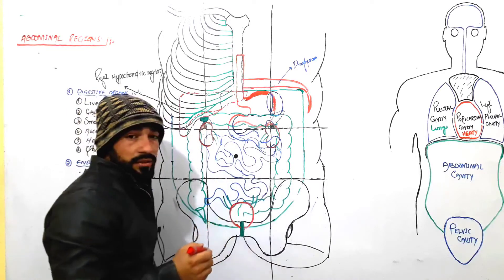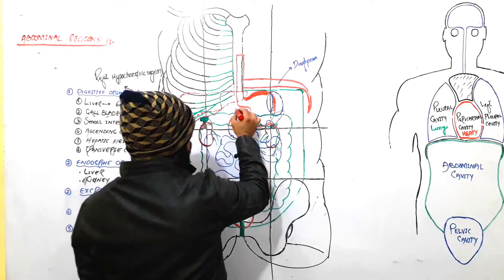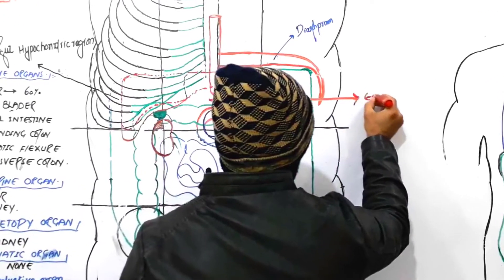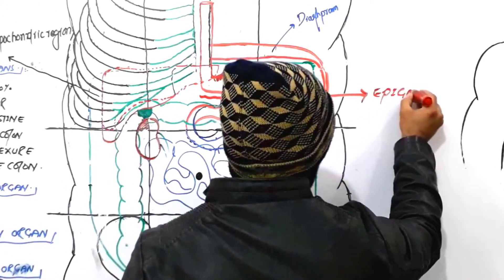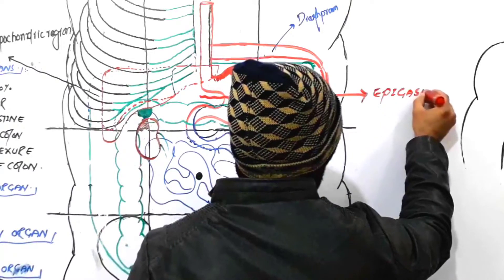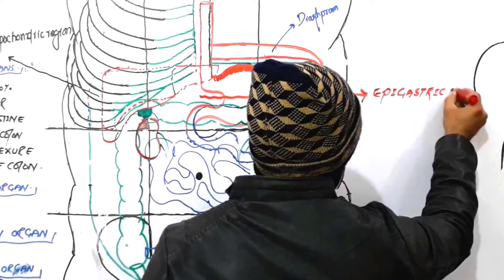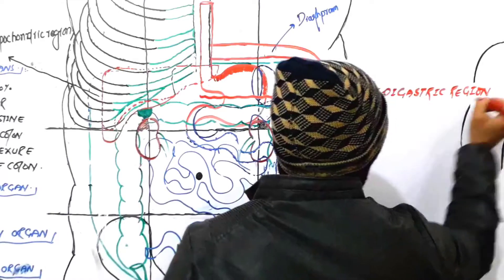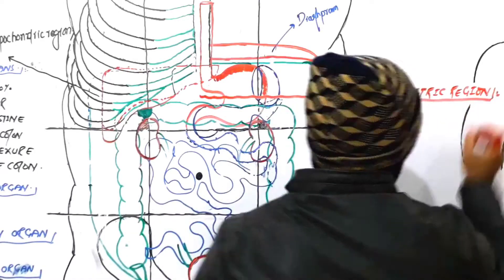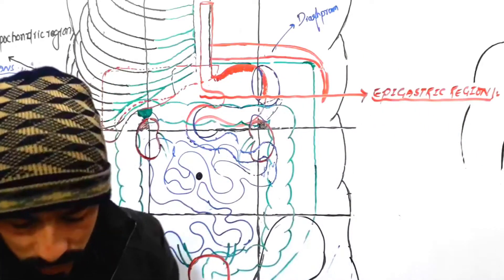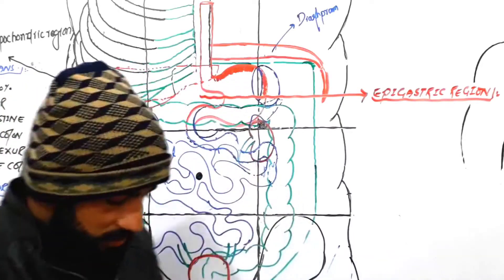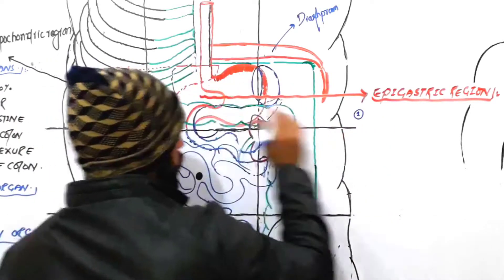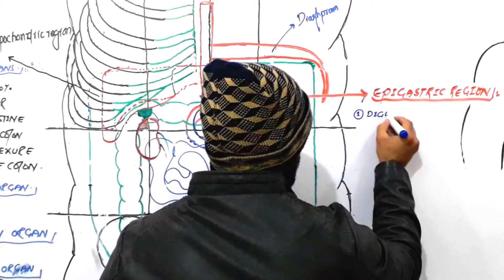We are going to discuss the organs of the epigastric region. This region here is our epigastric region. 'Epi' means above, 'gastric' means stomach — so epigastric region means above the stomach. What are the organs present in the epigastric region? First of all, we should know that in the epigastric region there are some organs which play a role in the digestion of food — we call these the digestive organs.